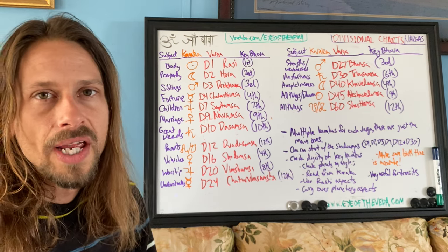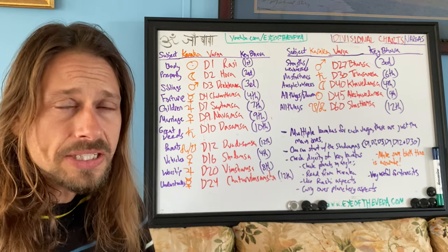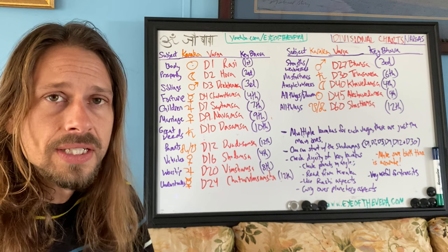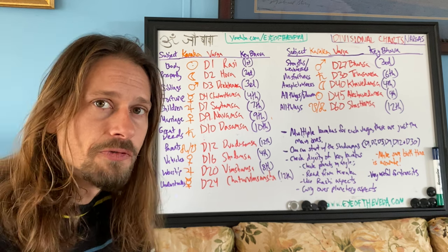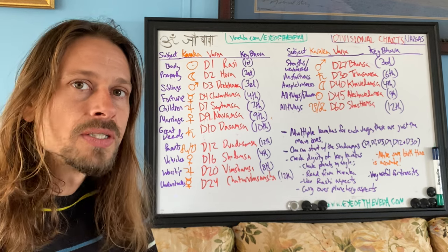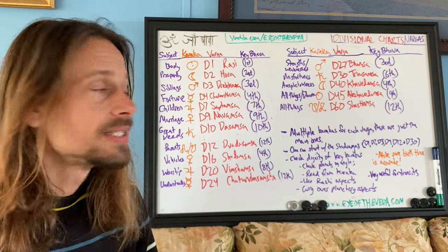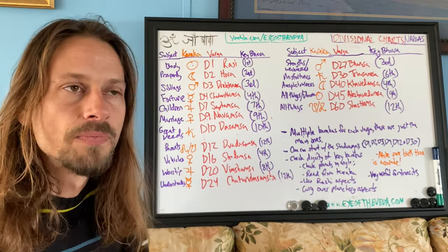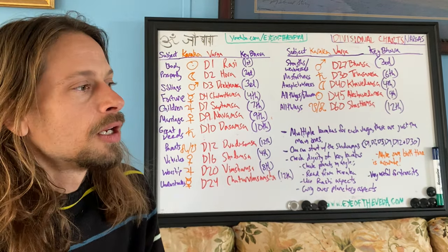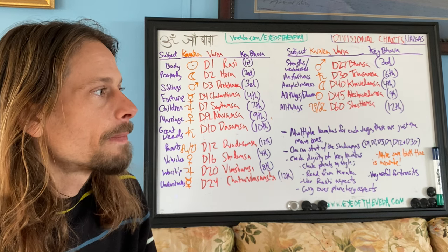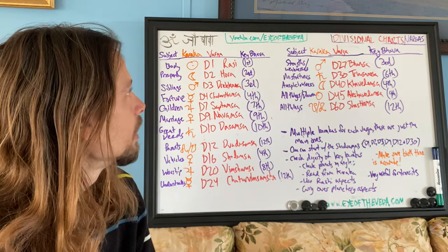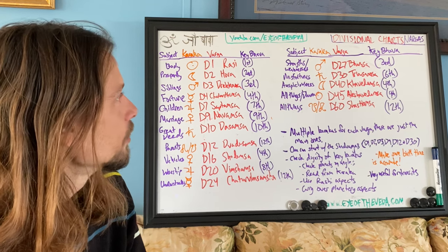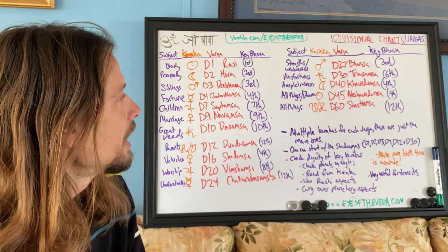Namaste everyone. Today we are going to introduce Vargas — divisional charts, as they're called in English. A Varga just means a division. You can also hear it called Amshas or Amsa — A-M-S-A — which also means division. Now, where to begin with Vargas and divisional charts? This is something that most people are not familiar with.